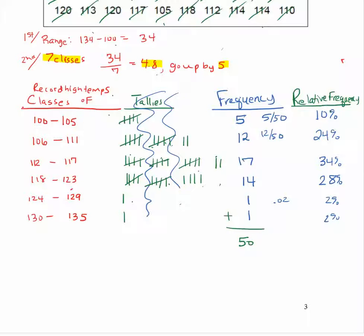So the frequency distribution is just going to be the classes with the frequency. The relative frequency distribution would be the classes with the percentages instead.